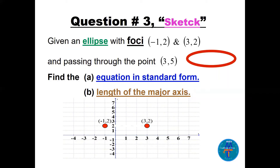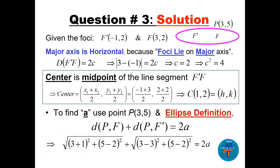To find the equation, we need a and b. The distance between the two foci F and F′ is 2c. Since they are on the same horizontal line, 2c = |3 − (−1)| = 4, so c = 2 and c² = 4. The center is the midpoint of FF′: using the midpoint formula, center = ((−1+3)/2, (2+2)/2) = (1, 2).